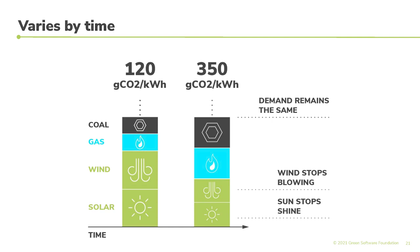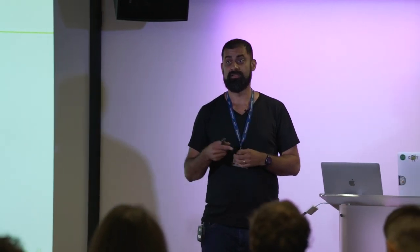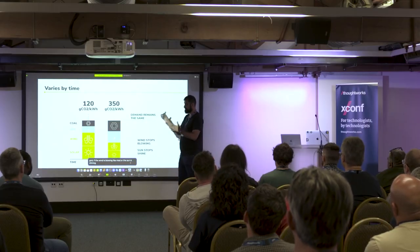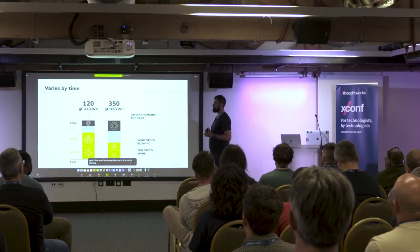If they don't feed enough electricity into the grid, you get something called a brownout — things start flickering. A blackout actually happens when there's too much electricity on the grid; if the wind suddenly surges and too much electricity goes onto the grid very quickly, they have to trip a circuit breaker to stop things burning out. So wind and solar add some really interesting dynamics to the mix.